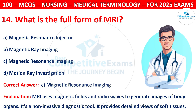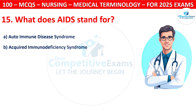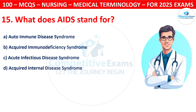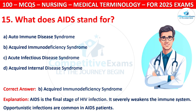Question 15: What does AIDS stand for? Options are: Autoimmune Disease Syndrome, Acquired Immunodeficiency Syndrome, Acute Infectious Disease Syndrome, or Acquired Internal Disease Syndrome. The correct answer is B, that is Acquired Immunodeficiency Syndrome. AIDS is the final stage of HIV infection. It severely weakens the immune system. Opportunistic infections are common in AIDS patients.